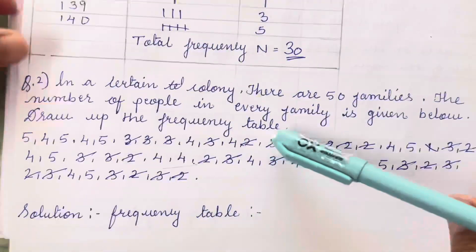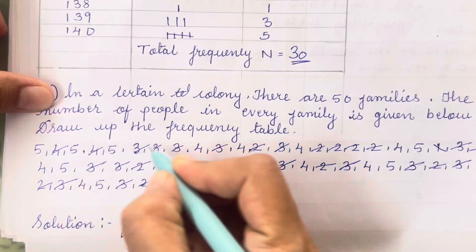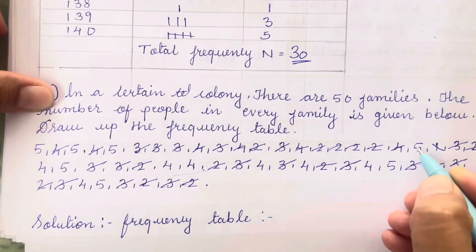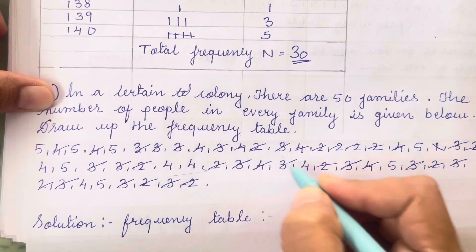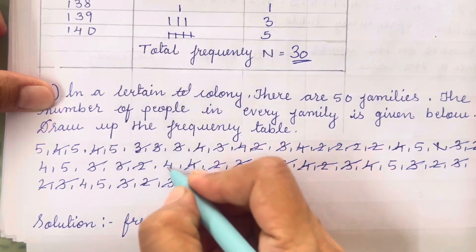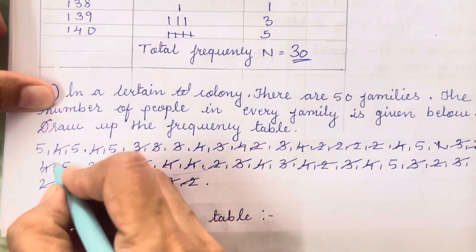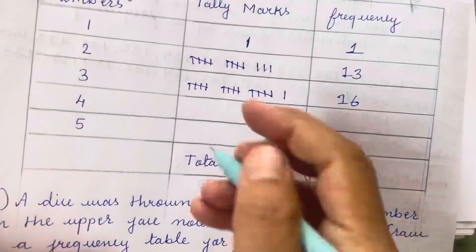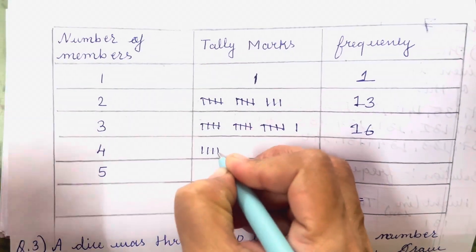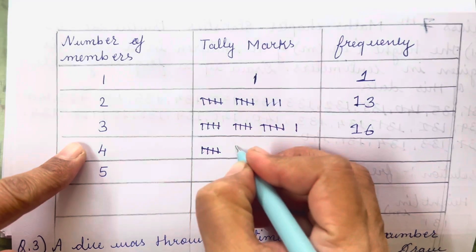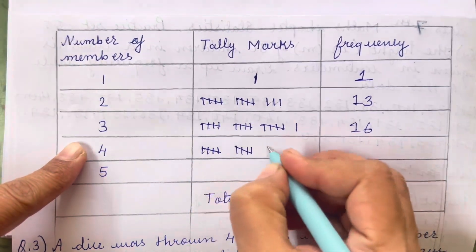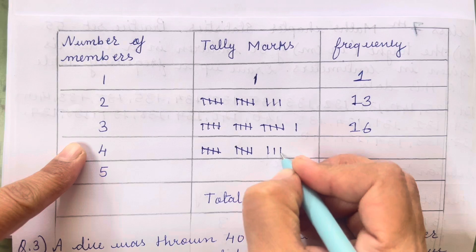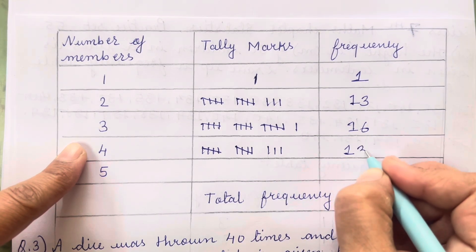Then we will count 4. Counting: 1, 2, 3, 4, 5, 6, 7, 8, 9, 10, 11, 12, 13 — so the frequency for 4 is 13.